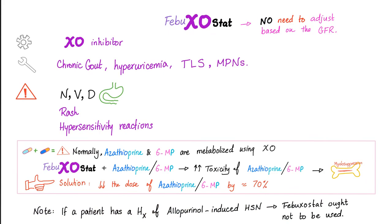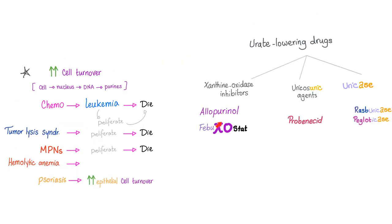Febuxostat is similar to allopurinol. However, good news: there is no need to adjust the dose based on the GFR. Bad news: it's more expensive. So allopurinol and febuxostat can be used in all of these conditions such as chemotherapy, leukemia, tumor lysis syndrome, myeloproliferative neoplasms, anemias, and even psoriasis.